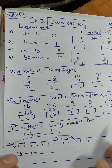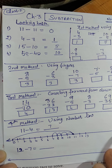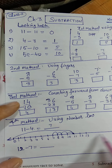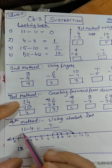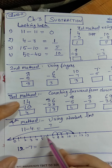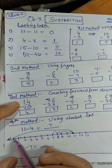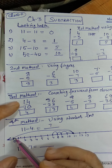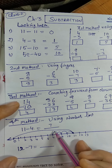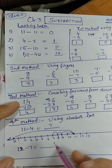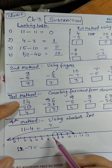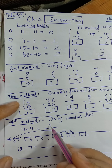The fourth method is using a number line. Draw a number line using a scale, with points marked like centimeter intervals. For 11 minus 4: go directly from 0 to 11, then come 4 steps back — 1, 2, 3, 4 — and you reach 7. So the answer is 7. In addition you go forward on the number line; in subtraction you come backward.